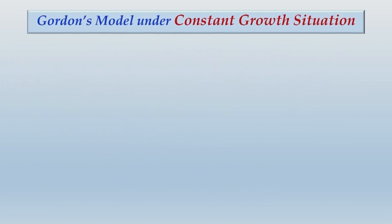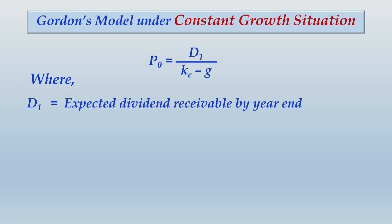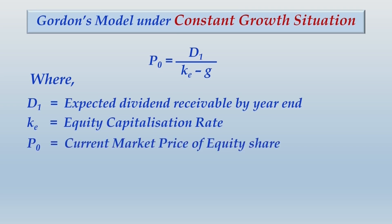Now we deal with the first scenario — Gordon's model under constant growth situation. The formula is P0 equals D1 divided by Ke minus G. D1 is the expected dividend receivable by year-end. Ke is the equity capitalization rate. P0 is the current market price of the equity share, or the present value of the share. G stands for growth rate.